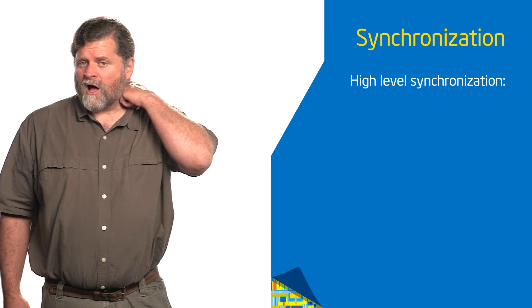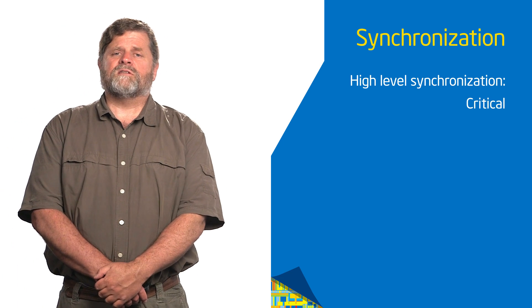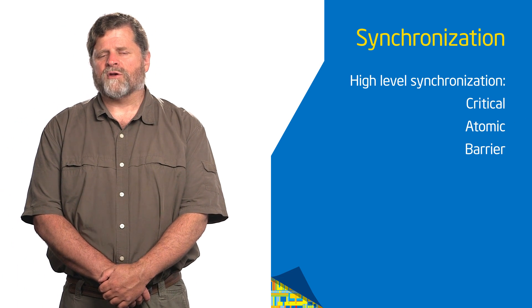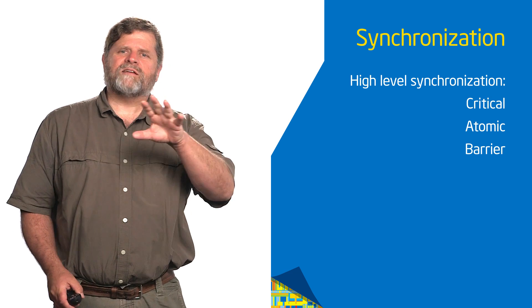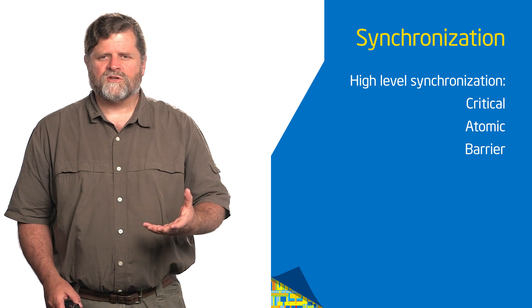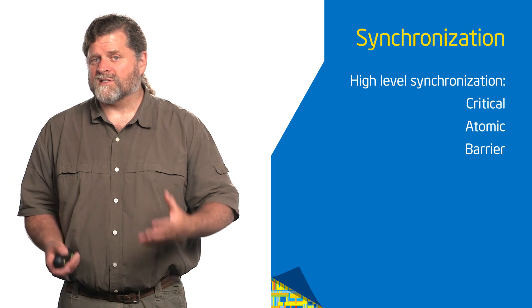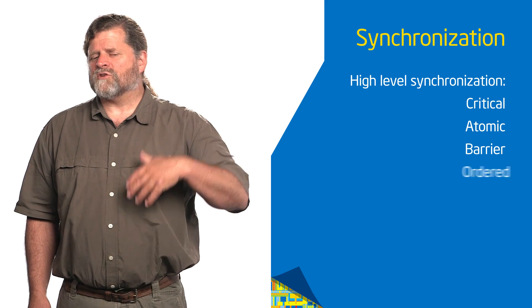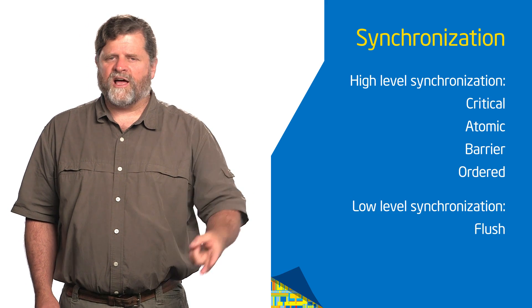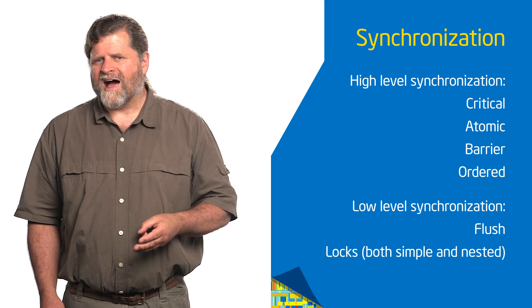The constructs involved are the critical construct, the atomic construct, and the barrier construct. There's also the ordered construct, flush, and some low-level locks — we'll talk about those later. For right now, we're just going to stick to these really simple ones because I want you to get started and actually start working with and adding synchronization to your programs.